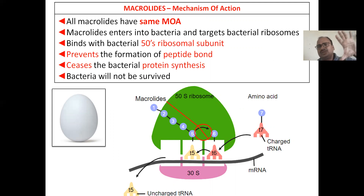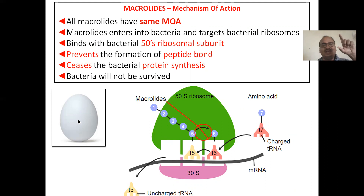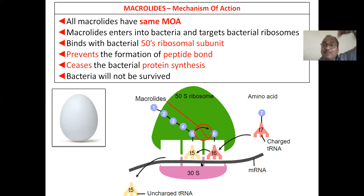All macrolides share the same mechanism of action, so don't worry in exams — azithromycin, erythromycin, all '-thromycins' have the same mechanism. Inside the microorganism (bacteria), there is a ribosome that looks egg-shaped. It has a 50S subunit (large) and a 30S subunit (small).